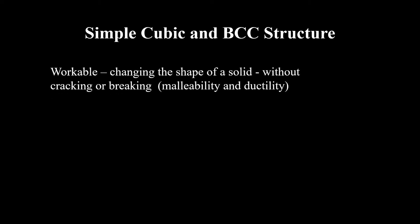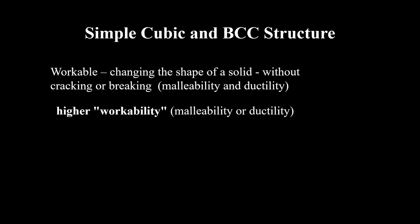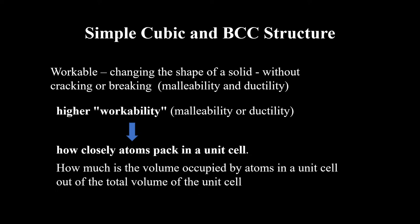The term 'workable' means that we have a solid material or metal that we can change the shape of without breaking or cracking. So we say the material is malleable and ductile. To quantify how well-packed a material is, we look at how many atoms are packed into one unit cell compared to the total volume — we call this the packing fraction.